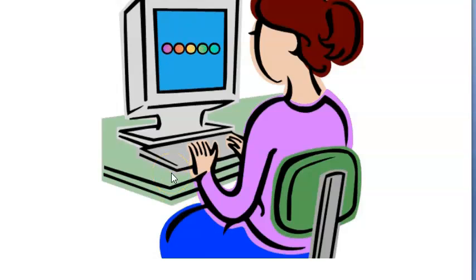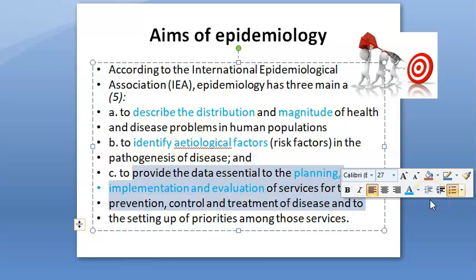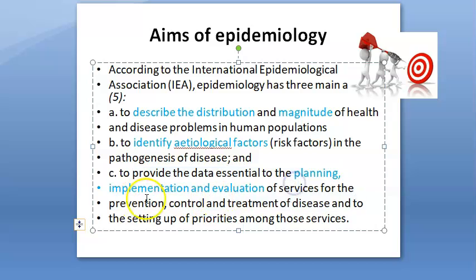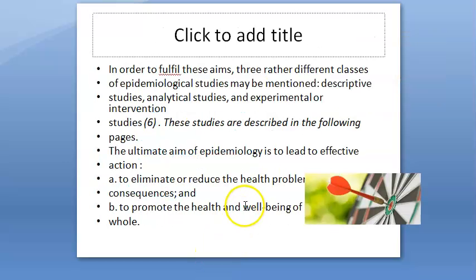You can also decide the priority among these services — how big the issue is, what the distribution is, what the etiological factors are, and how you will plan, implement, and evaluate services for prevention, control, and treatment. The same language of distribution and determinants continues throughout.